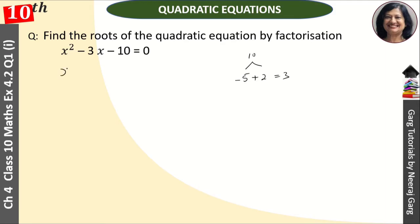So here we have x square minus 5x plus 2x minus 10 is equal to 0.